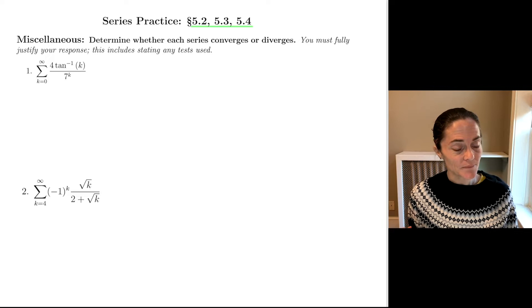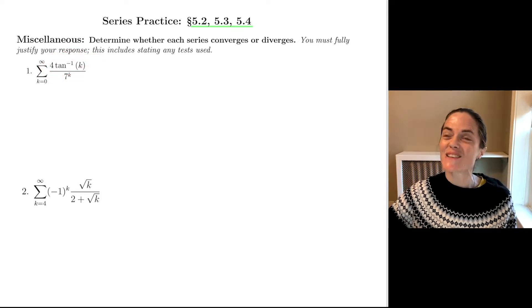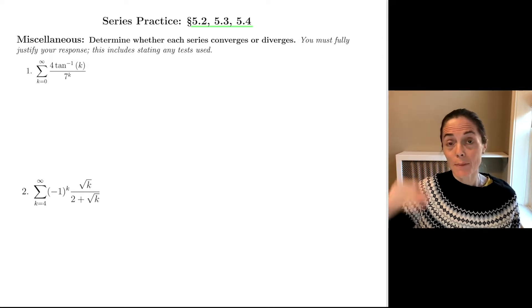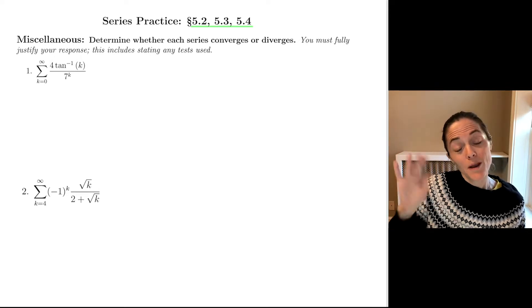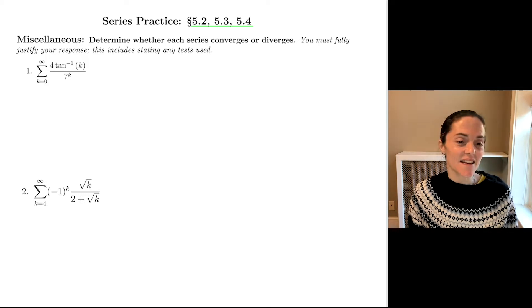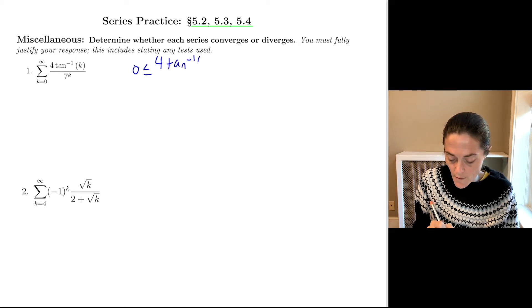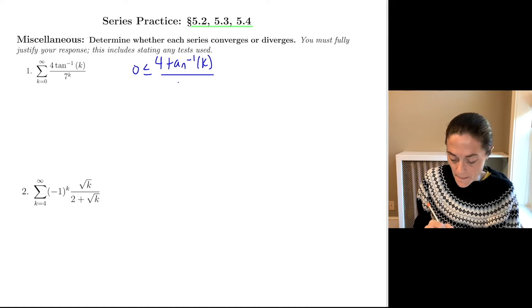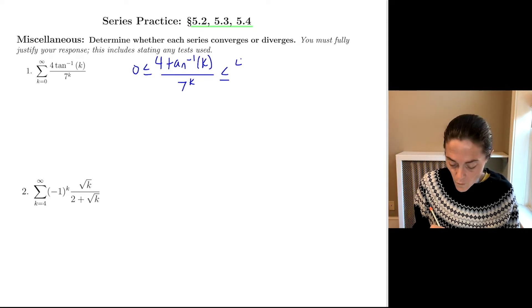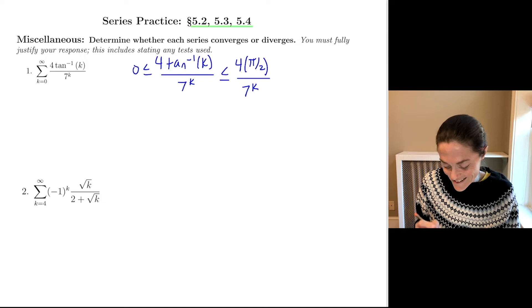Okay, well, this first one, when I see tan inverse, I think about the fact that the limit as k goes to infinity of tan inverse of k is pi over 2. Moreover, tan inverse sits between minus pi over 2 and pi over 2. And for k greater than or equal to 0, tan inverse is non-negative. So I'm going to use comparison here. This is a non-negative series. We have 0 less than or equal to my series tan inverse of k divided by 7 to the k, and tan inverse is less than or equal to pi over 2. So this would be 4 times pi over 2 over 7 to the k.